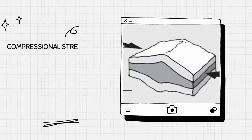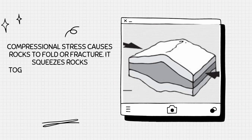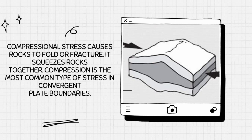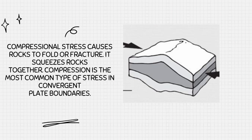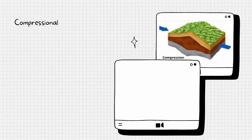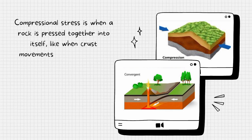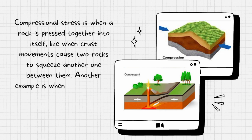Compressional stress causes rocks to fold or fracture — it squeezes rocks together. Compression is the most common type of stress in convergent plate boundaries. Compressional stress is when a rock is pressed together against itself, like when cross movements cause two rocks to squeeze another one between them.